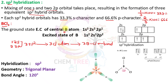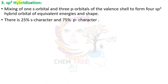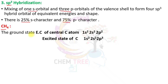Other examples undergoing SP² hybridization include aluminum chloride and boron trifluoride. In SP³ hybridization, 1s orbital and 3p orbitals are intermixed to produce four equivalent hybrid orbitals. The s character is 25% and p character is 75%.